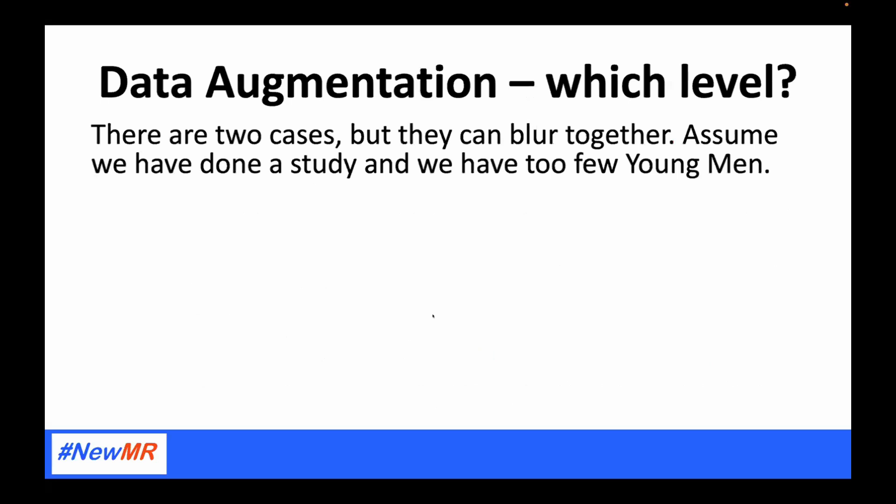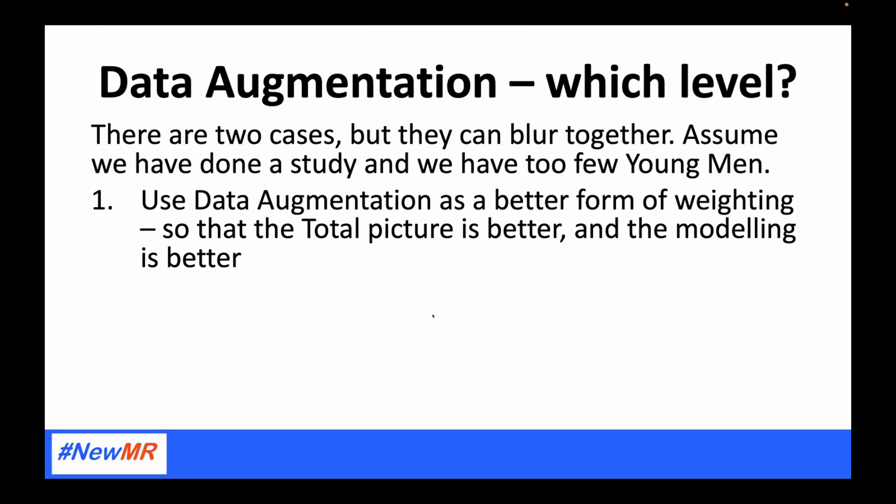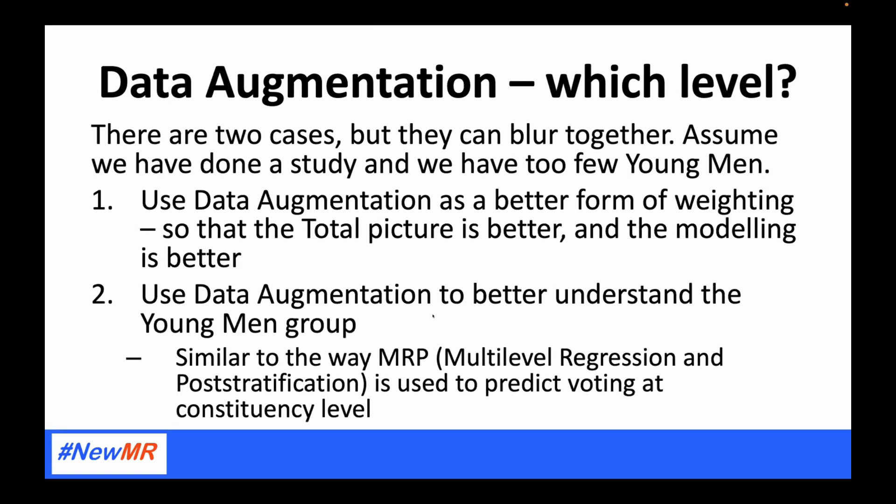There are perhaps two cases for data augmentation that we need to think about separately, though they tend to blur. Imagine you've done a study and you've got too few young men. You can use data augmentation as a better form of weighting, so the total picture is better and the modeling behaves in a less lumpy way — that is really data augmentation, nothing more than a slightly better form of weighting if it works. Some people reject it and say weighting is a better solution.